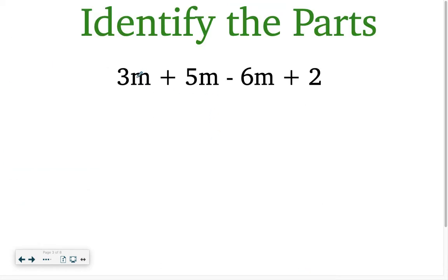So let's identify the parts. So if we break this down, this is a term, term, term, and another term. And then I'm just going to write out all of the different terms we have. So we have a negative with that 6, so I'm going to bring that down.